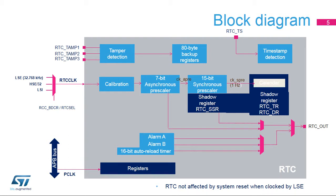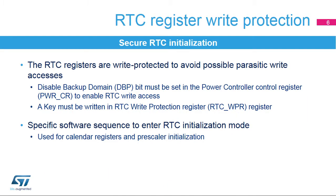The SSR register resolution is increased by reducing the asynchronous prescaler value. The asynchronous prescaler can also be bypassed. In this case, the sub-second register resolution is defined by the RTC clock frequency.